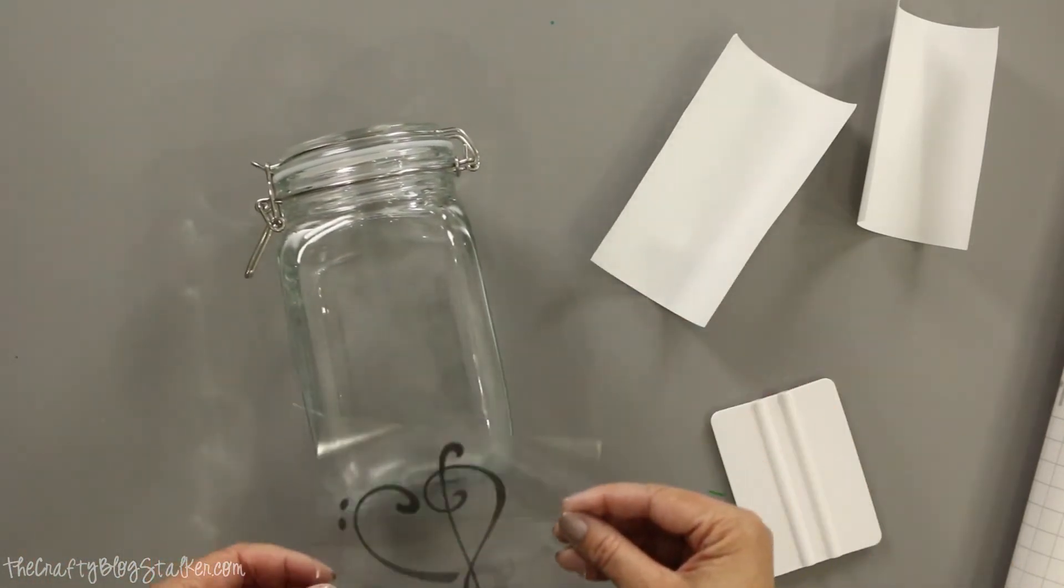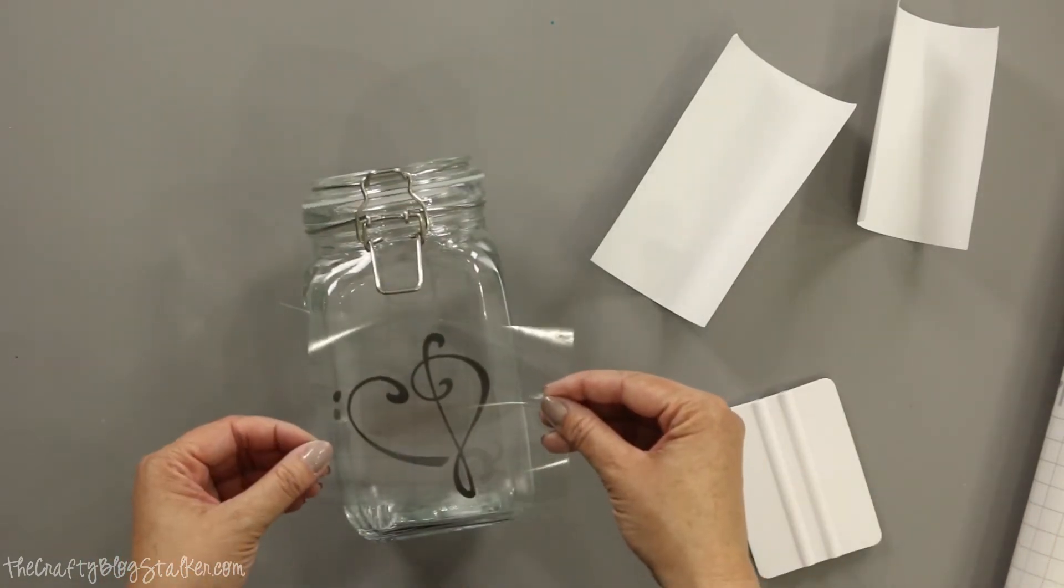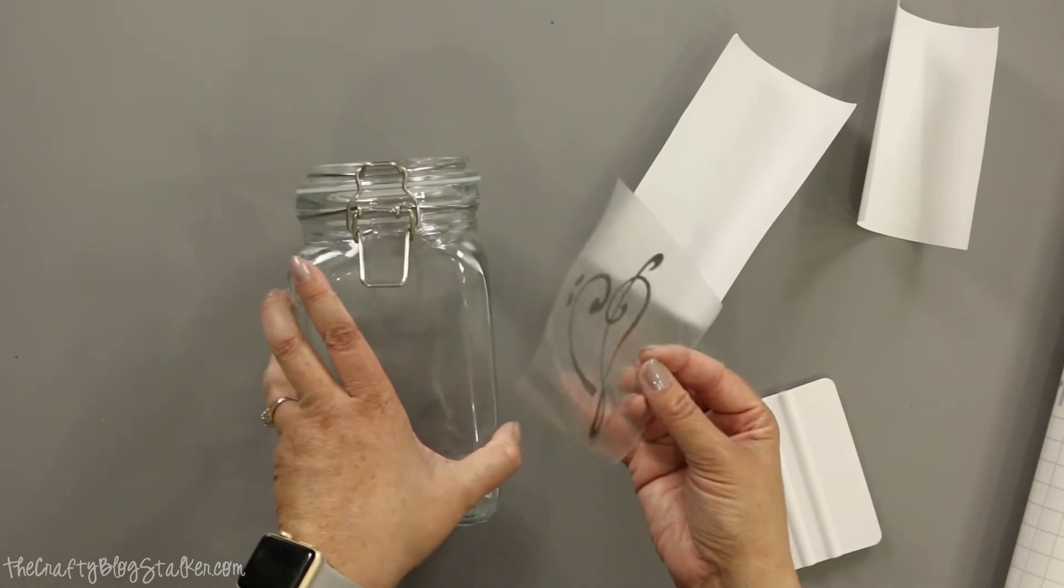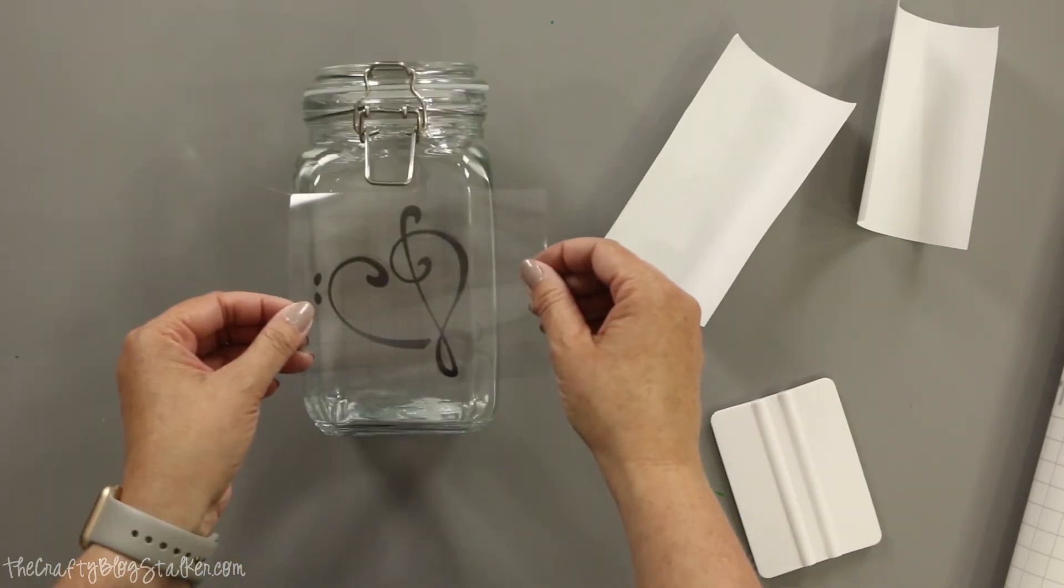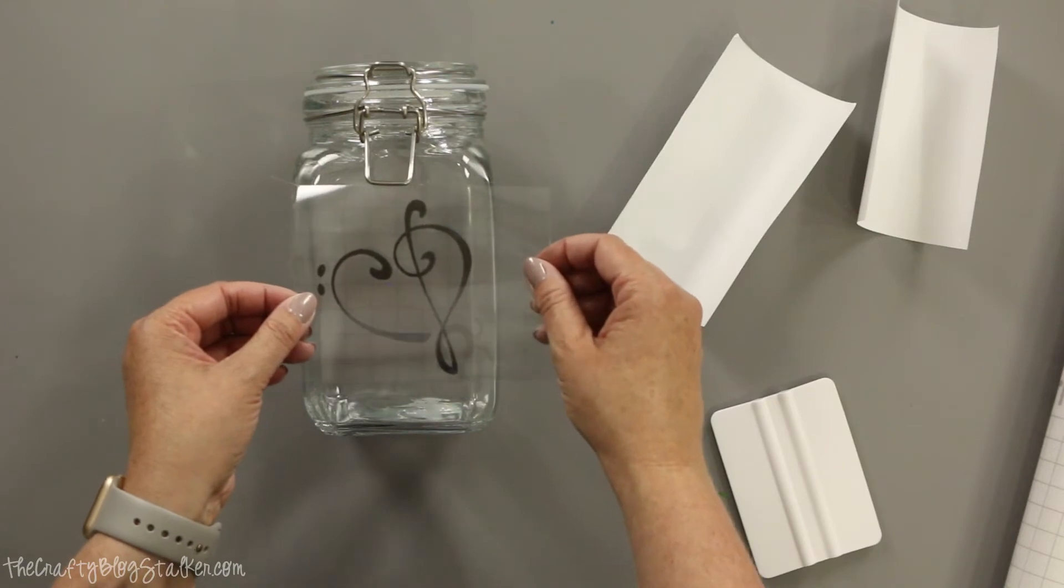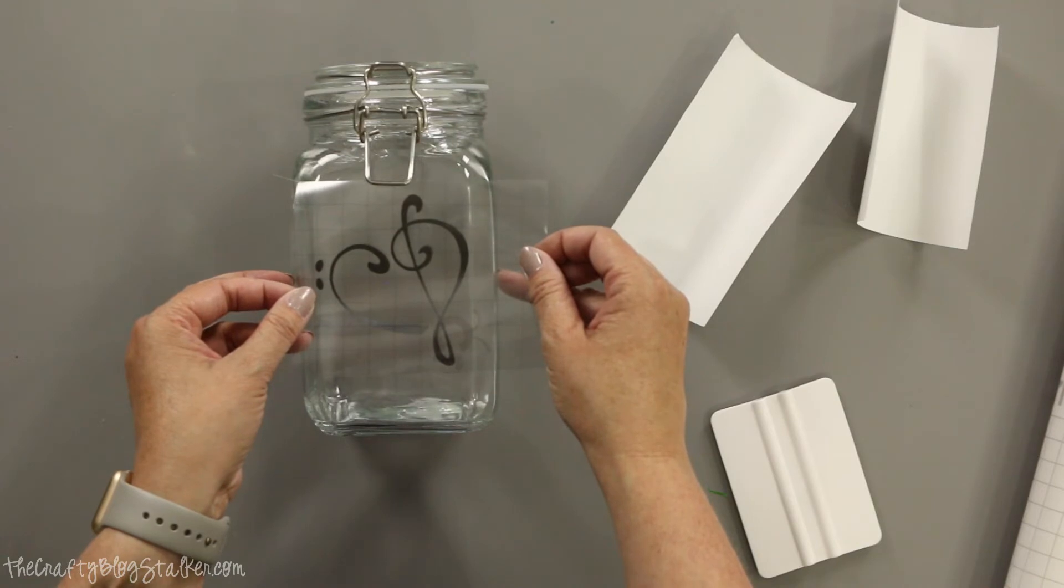So now I'm just going to put it over here on my jar. And where do I want my heart? Do I want it on the front, or do I want it on the side? So I'm going to just kind of center it on there. Again, I'm just going to eyeball it because I'm not a perfectionist. I'm an easiest.